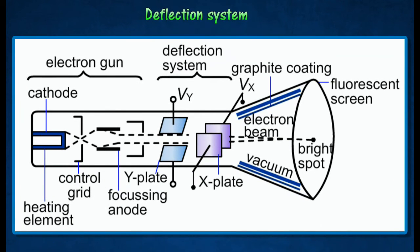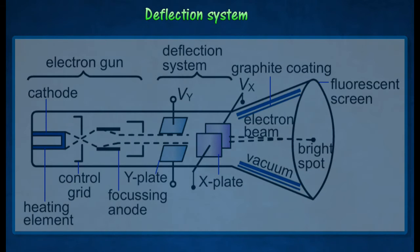The deflection system is made up of two pairs of parallel plates, for example Y plates and X plates. Y plates are two horizontal plates that can deflect the electron beam vertically.